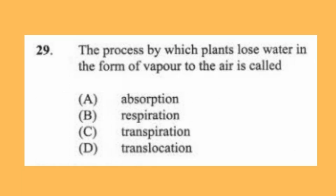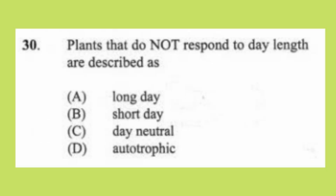Question 29: The process by which plants lose water in the form of vapor to the air is called (a) absorption, (b) respiration, (c) transpiration, (d) translocation. The answer is C, transpiration.